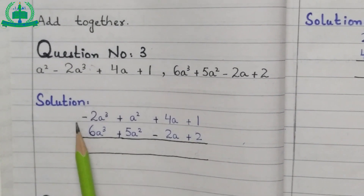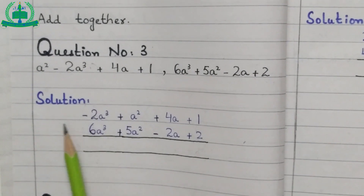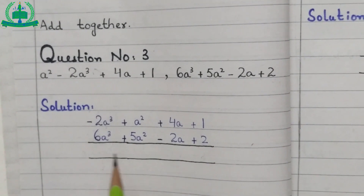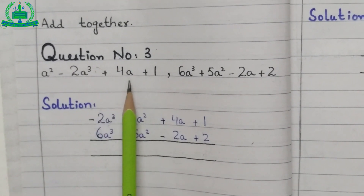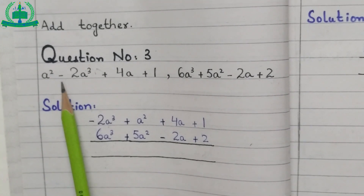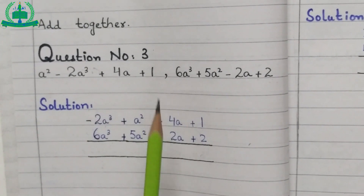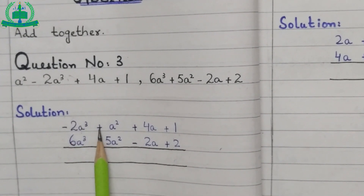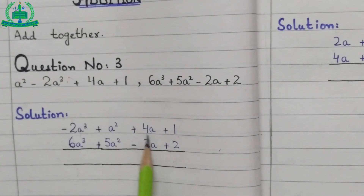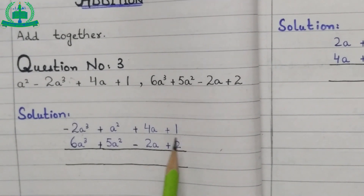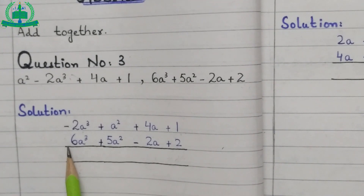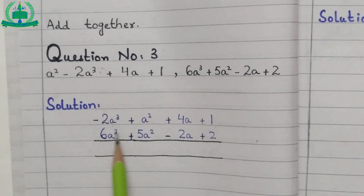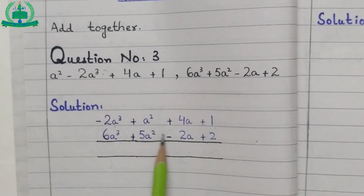Defining the solution — first of all, arrange the variables and powers. The largest power is a cube, then a square, then a, and then the constant digit. So we write the first term as: minus 2a cube plus a square plus 4a plus 1. Then we arrange the second term like the first term: 6a cube plus 5a square minus 2a plus 2.